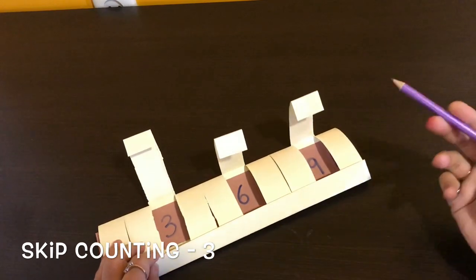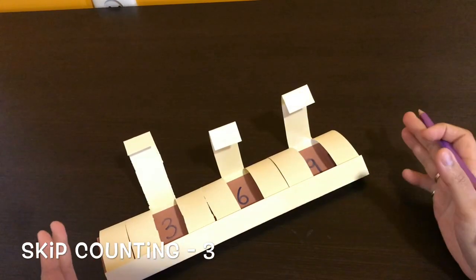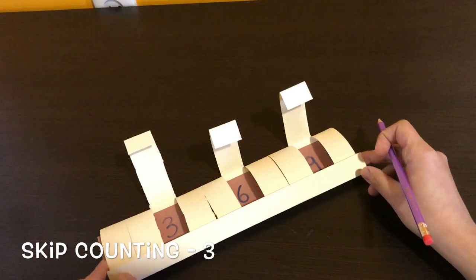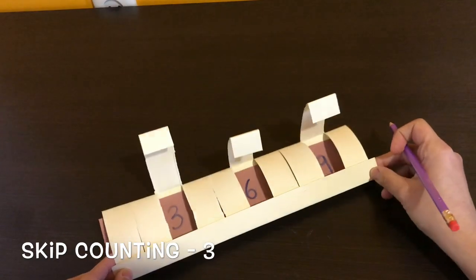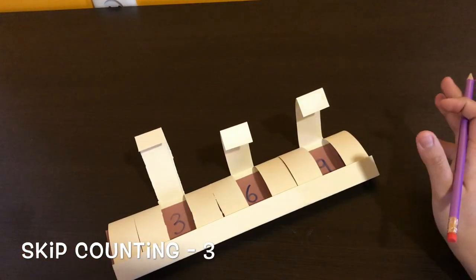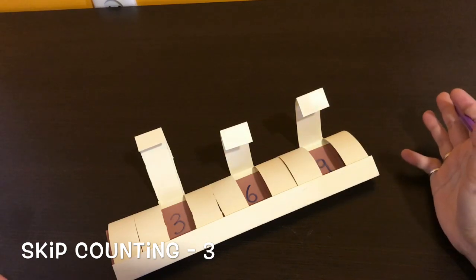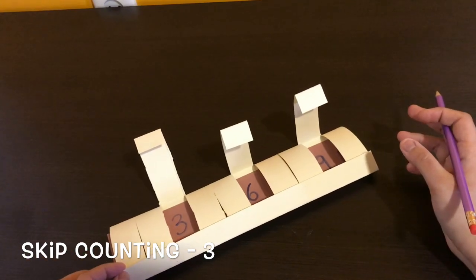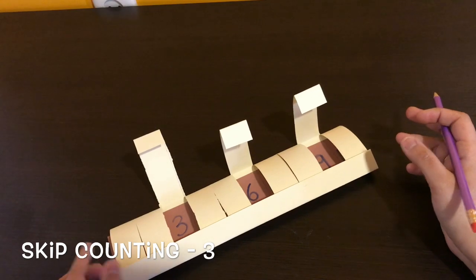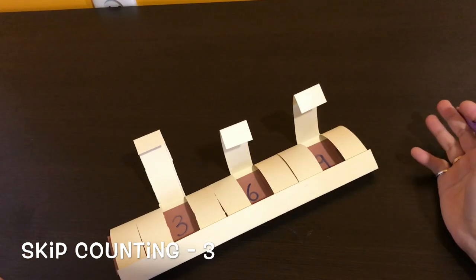So visually, the child can actually see the concept of skip counting being played out. So this is something very easy which can be made under 5 minutes with just 2 or 3 things that you need in the house. Definitely you're going to have some stock paper, a marker and some glue. So it's not going to take you time at all.